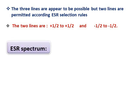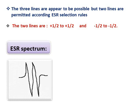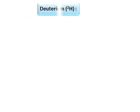The ESR spectrum is recorded using a modern ESR spectrometer as a first derivative of absorption intensity against magnetic field (dI/dH vs H). The ESR spectrum of hydrogen shows two lines with equal relative intensity of 1:1.